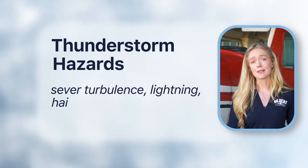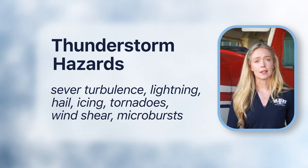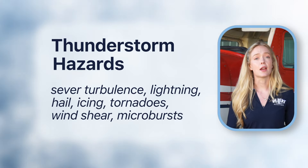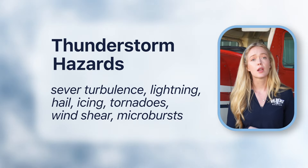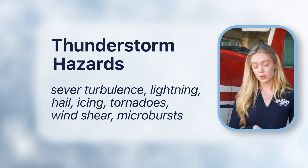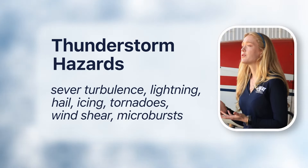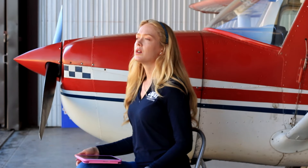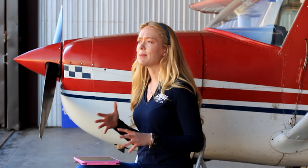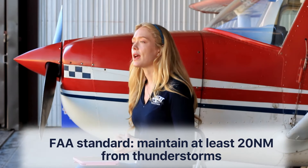Overall, the hazards of a thunderstorm include severe turbulence, lightning, hail, icing conditions, tornadoes, wind shear, microbursts, and more. So how do we make decisions with this information? The FAA suggests maintaining at least 20 nautical miles away from a thunderstorm.